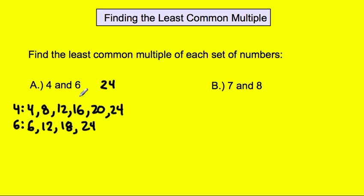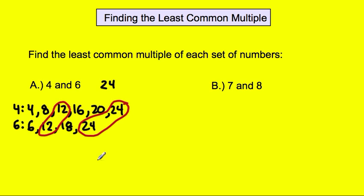I stop there because the least common multiple will never be more than those two numbers multiplied together. At that point, I am going to circle the multiples that are on both lists. I've identified that 12 is on both lists and 24 is on both lists. Which one is the least? It's 12, because it's the smallest number. So the least common multiple — common means both lists — equals 12.